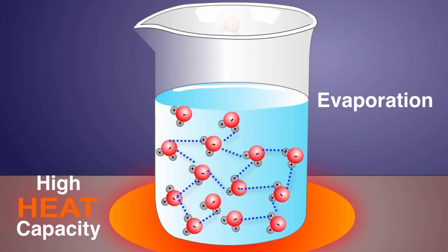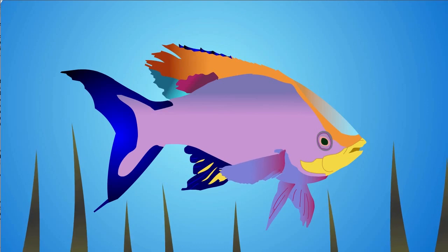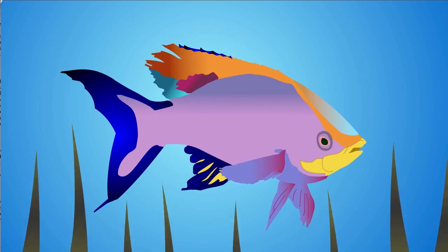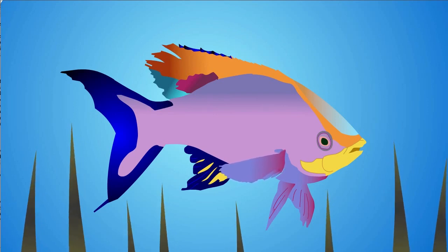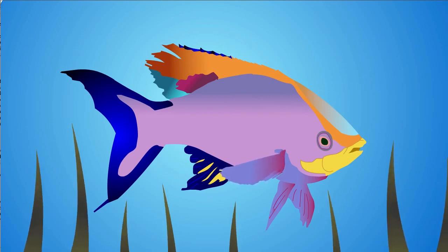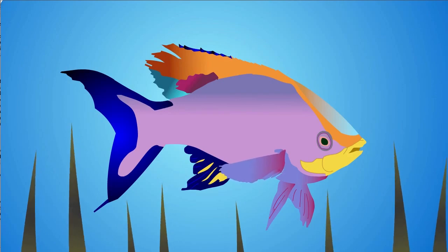This not only stabilizes the temperature of bodies of water, such as lakes and oceans, but also plays an important role in the physiology of an organism. Since life is based on water, and the temperature of water rises and falls slowly, living organisms are better able to maintain their normal internal temperatures, and are protected from rapid temperature changes.